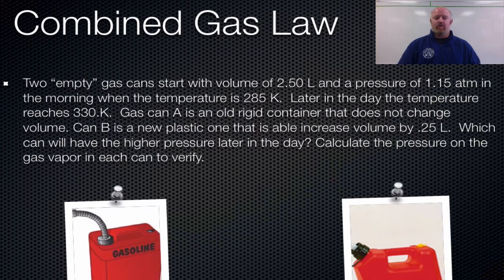gas can A is one of those old metal rigid ones that won't flex. Gas can B is one of those new plastic ones that can move and flex a little bit. So at the end of the day, when it's warm, gas can B can actually increase its volume by 0.25 liters. So if you calculate the temperature at the end of the day, when it reaches 330 Kelvins, what will the pressures be on the inside of those two different canisters? So go ahead and tackle this problem, solving for each canister, one that the volume changes, one that the volume does not change, and then we'll go through the answer key in a second.